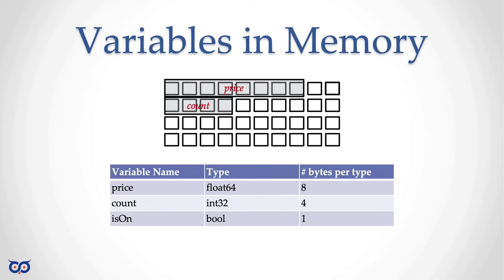Let's add a third variable. This time I have an isOn variable which is of type Boolean, and it only requires one byte. If you remember, we said that each unit of memory is eight bits. So I cannot get smaller than eight bits. Even though a Boolean value is simply true or false — in which case I only really need one bit — because I cannot access a single bit, we just have to use eight bits, which is one byte. So Boolean is one byte.